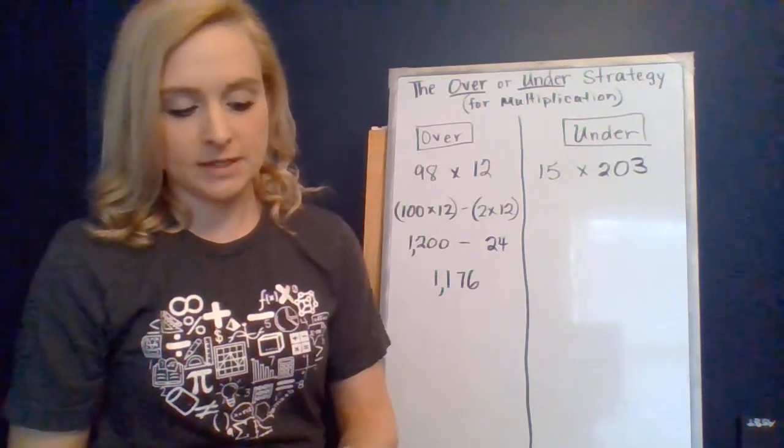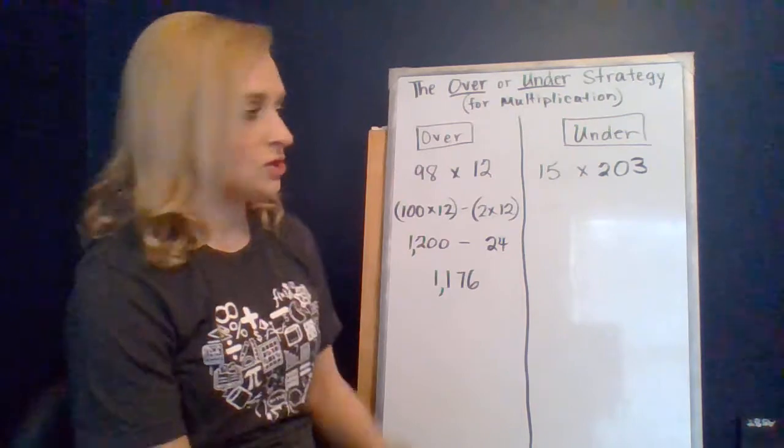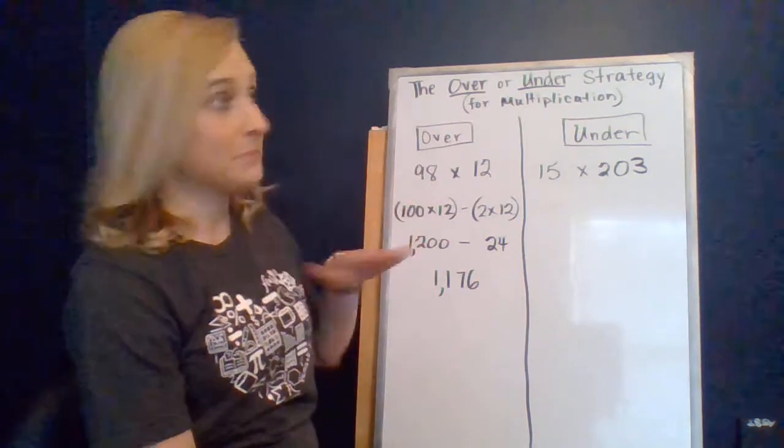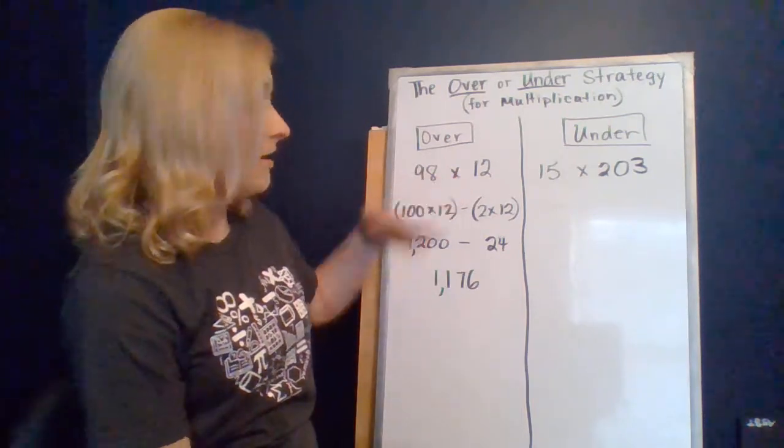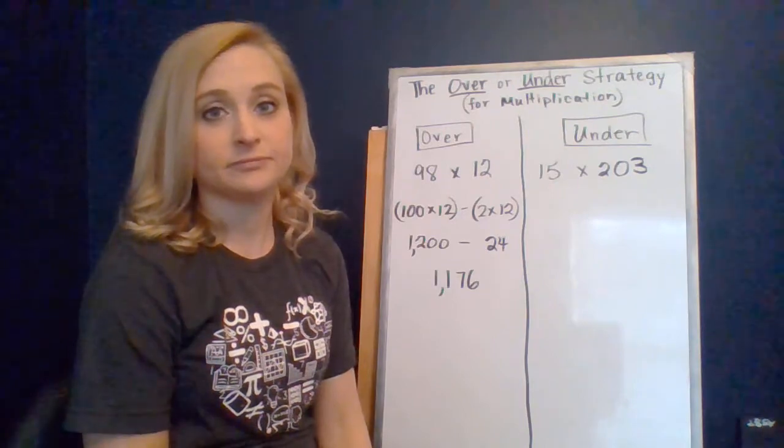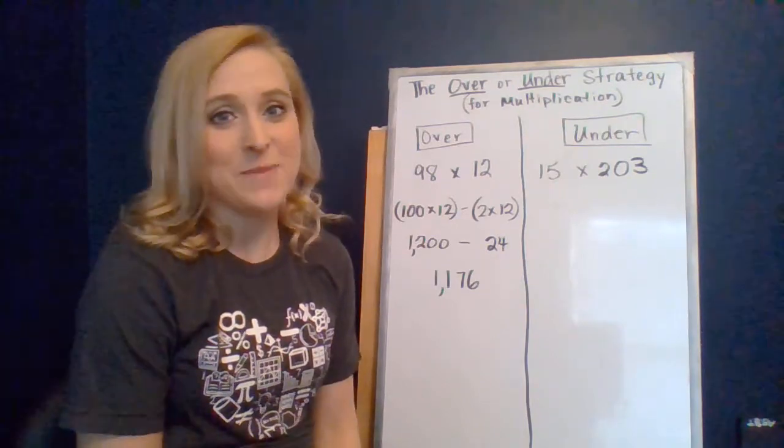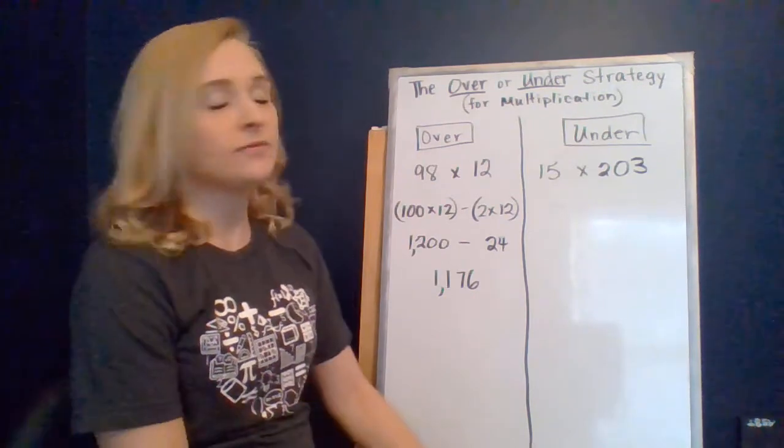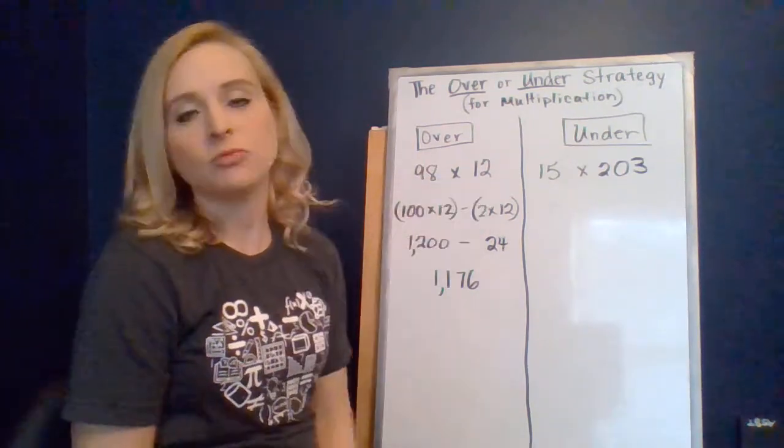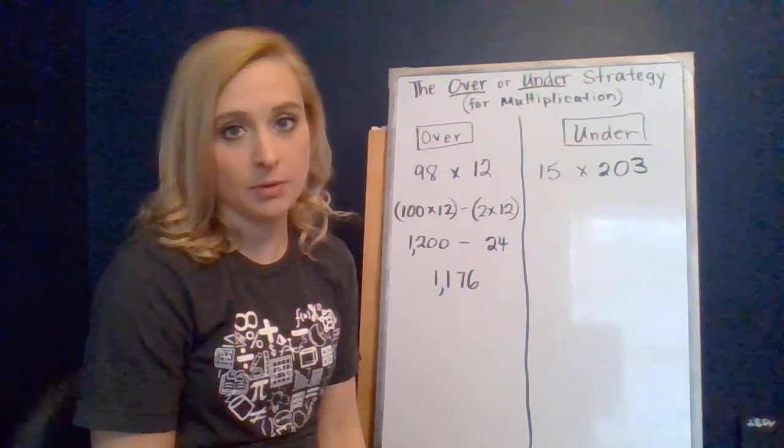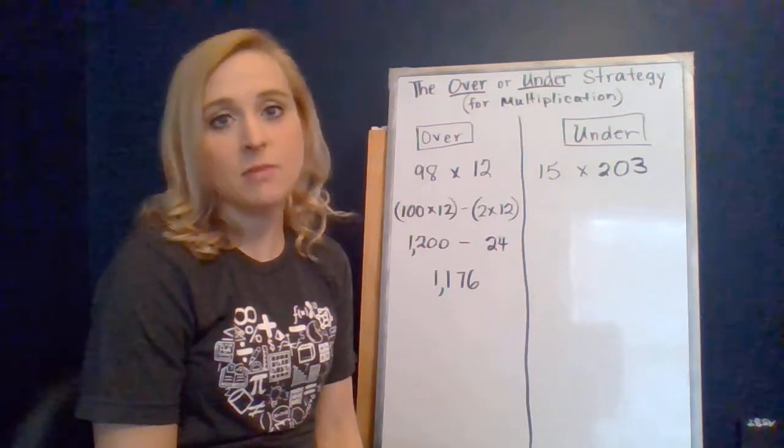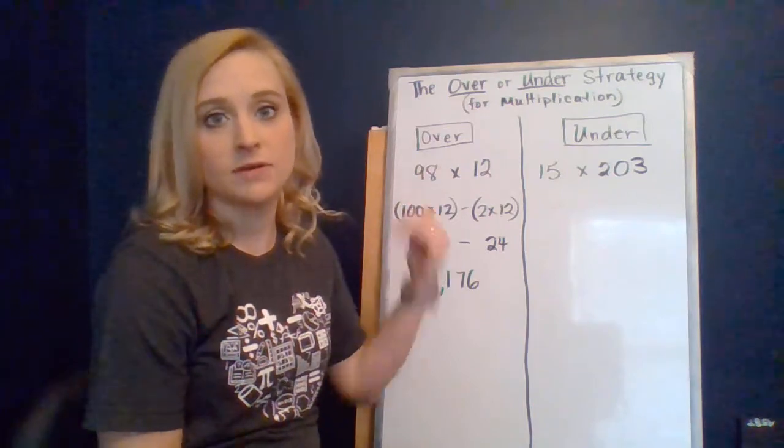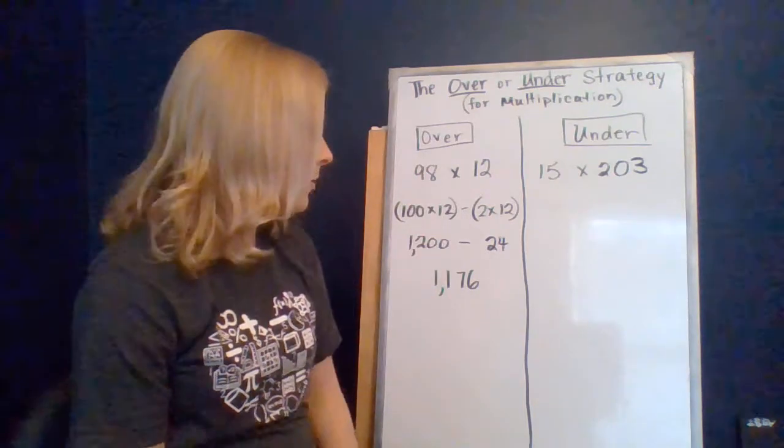Now when we talked about this in class, is it always efficient to always use the over strategy? Hopefully your answer is no. I mean, it's not always the most efficient. The only time that it's really efficient is if we have one of these factors that are really close to a friendly number. Just keep that in mind that this is a great strategy, but maybe not for every single problem that you encounter.